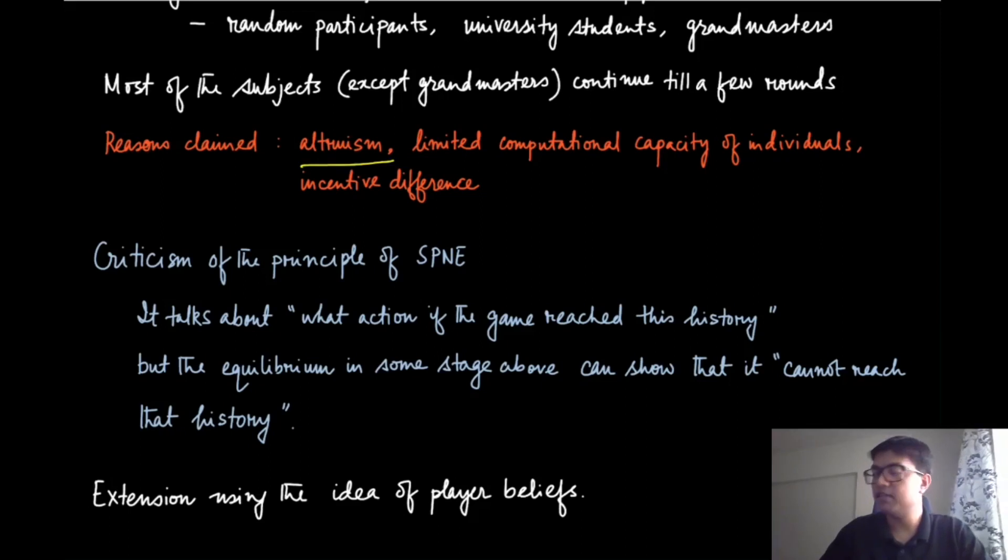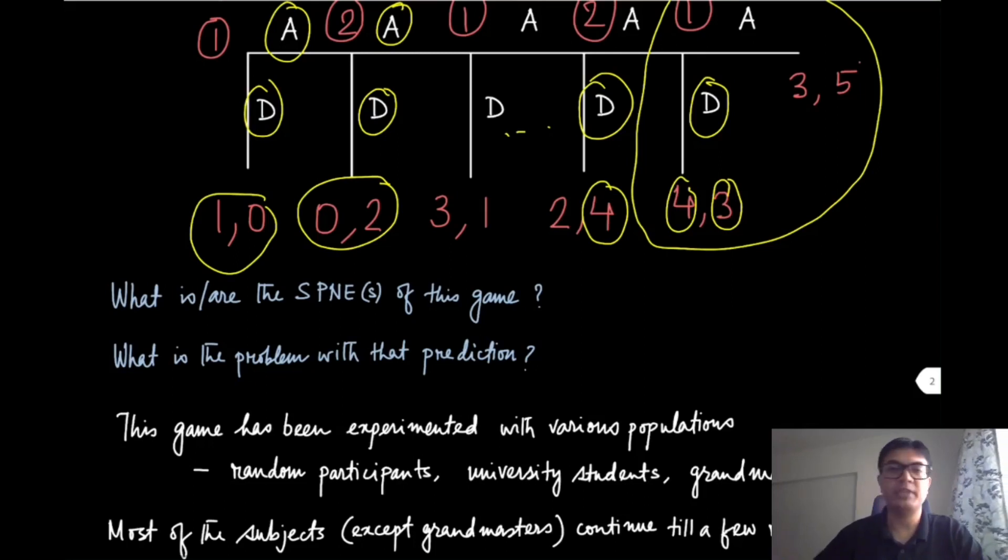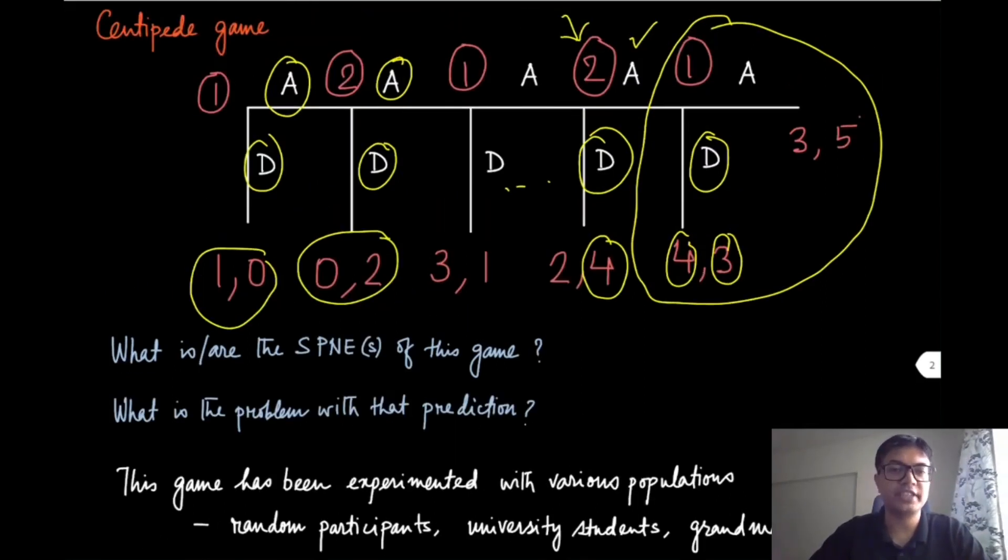or they have limited computational capability so that they cannot compute the subgame perfect Nash equilibrium and therefore do not pick that action. There are certain variations of this game—for instance, the same game has been experimented with larger differences in the payoffs. If all the utility numbers were multiplied by 10 or maybe 100, does it make any difference to the way people play? It turns out that it does make a difference, and the experiments have exhibited that.